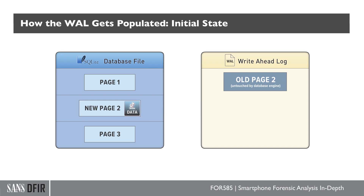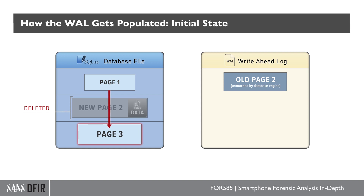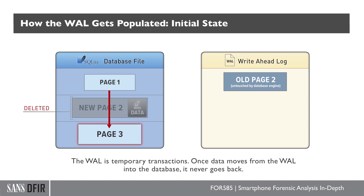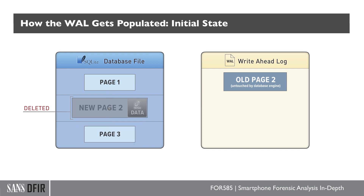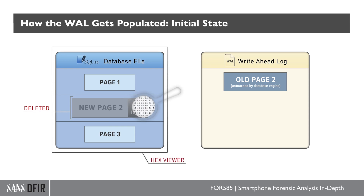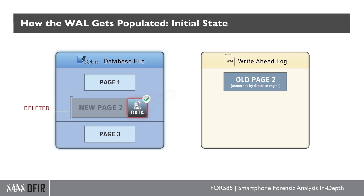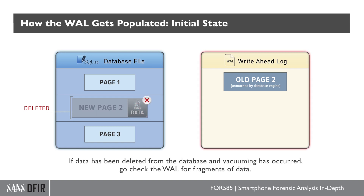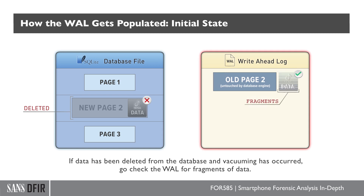If the user deletes something from the database, it would go to the free pages in that database — it doesn't go back to the WAL. The WAL is temporary transactions. Once data moves from the WAL into the database, it never goes back. You would have to look at the database in a hex viewer or carve it somehow to get deleted data from there. If vacuuming occurs, you're not going to uncover it. But the WAL may not be vacuumed — go check there, and you may see fragments of information that used to exist in that database.